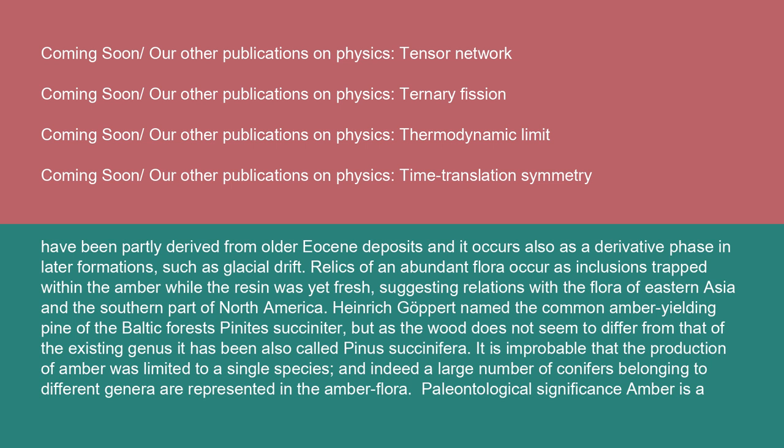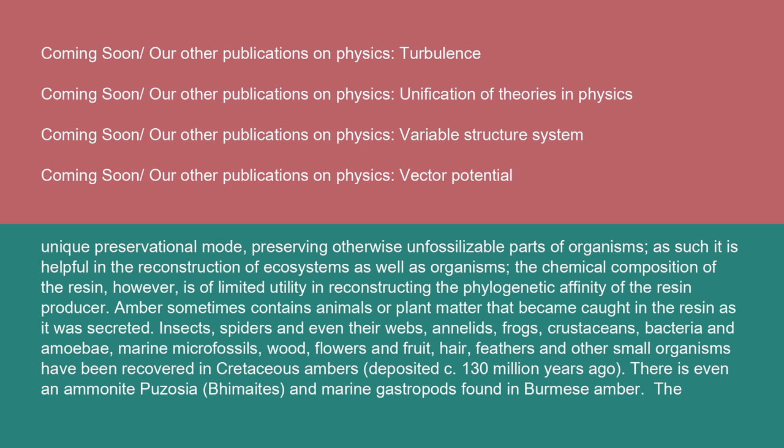Paleontological significance: Amber is a unique preservational mode, preserving otherwise unfossilizable parts of organisms. As such, it is helpful in the reconstruction of ecosystems as well as organisms. The chemical composition of the resin, however, is of limited utility in reconstructing the phylogenetic affinity of the resin producer. Amber sometimes contains animals or plant matter that became caught in the resin as it was secreted. Insects, spiders, and even their webs, annelids, frogs, crustaceans, bacteria, and amoebae have been found preserved.